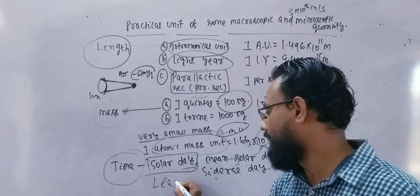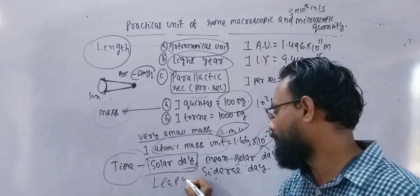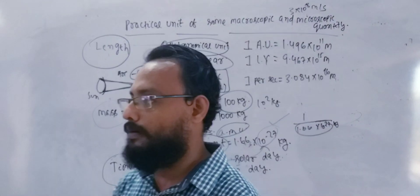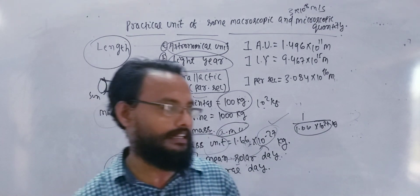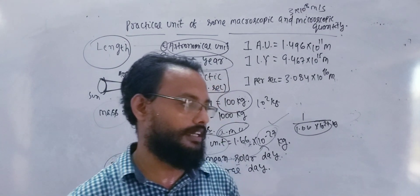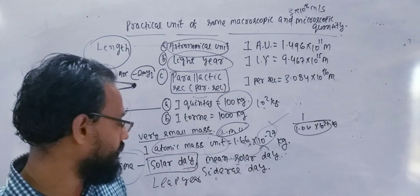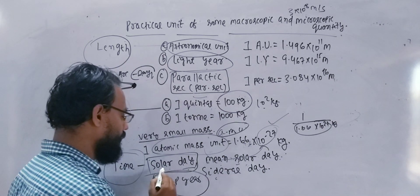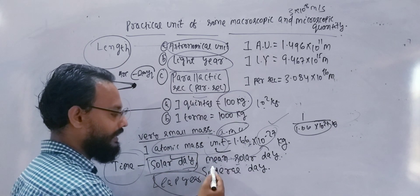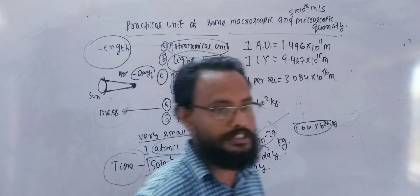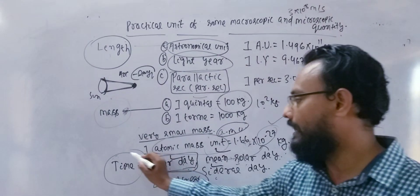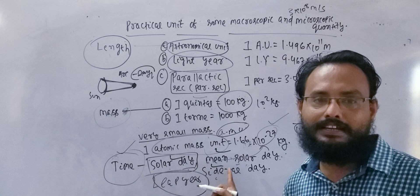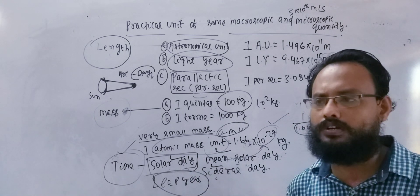Leap year means 3 months — February 8th is 24, so February 8th is leap year. So leap year, solar day, mean solar day, sidereal day — this is all time. Practical unit, time is practically small: nanosecond, microsecond.